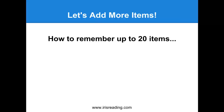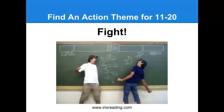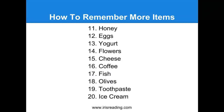Shall we add more items? Let's go up to 20 items. We know we have our pegs for one through ten. For items 11 through 20, we are going to create a theme: a fight theme. For 11 through 20, we're going to create the theme of fight — we've got to somehow associate the visualization of a fight happening. Here's the list for 11 through 20: honey, eggs, yogurt, flour, cheese, coffee, fish, olives, toothpaste, and ice cream. This 10-item list has now turned into a 20-item list.